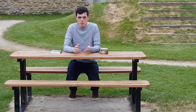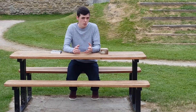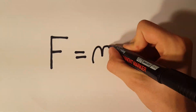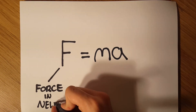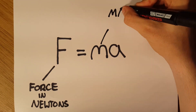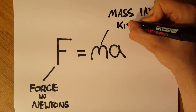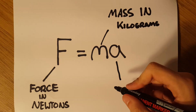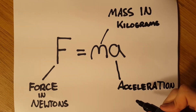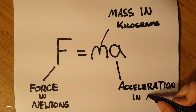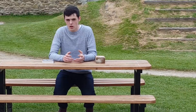Newton's second law of motion can be expressed in a pretty simple formula: F equals ma, where F is the force applied to the object in Newtons, M is the mass of the object in kilograms, and A is the acceleration that the object experiences.